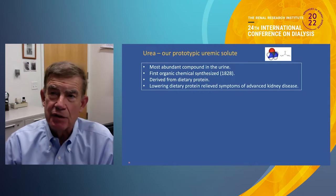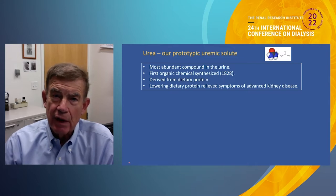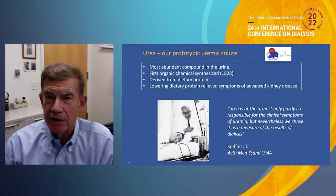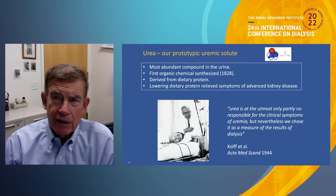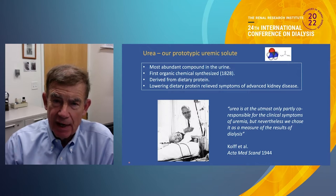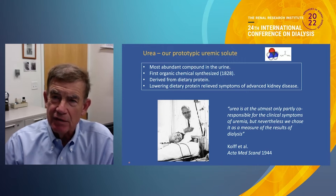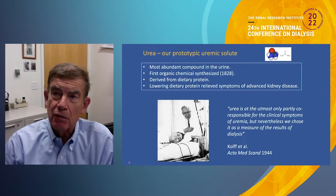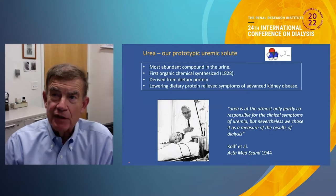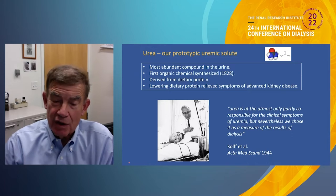Before dialysis was available, doctors noticed that lowering dietary protein relieved the symptoms of advanced kidney disease. However, as early as 1944, when Wilhelm Kolff — shown in a picture with an early dialysis patient — started dialysis, he realized that urea is at the utmost only partly co-responsible for the clinical symptoms of uremia. Nevertheless, we chose it as a measure of dialysis results, because it was the only thing he could measure in the two-doctor rural hospital where he did the first dialysis during World War II. The problem is that we've stuck with it over the next, now close on, 80 years.